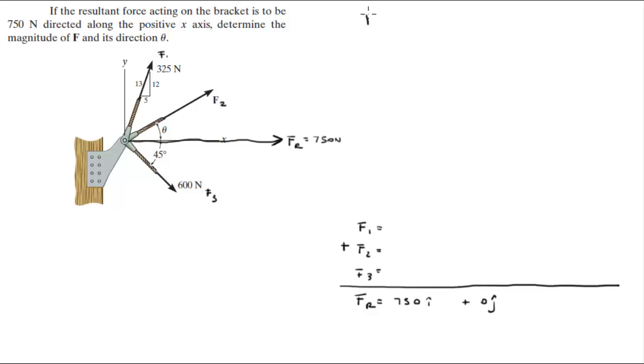Let's work with F1 first. F1 has an X component and a Y component. The X component of F1 is 325 times 5 over 13 and that comes out to be 125.